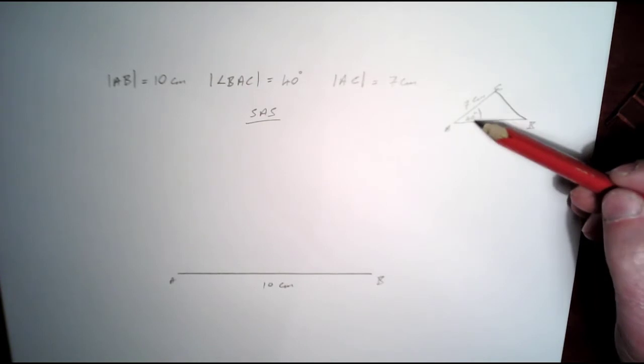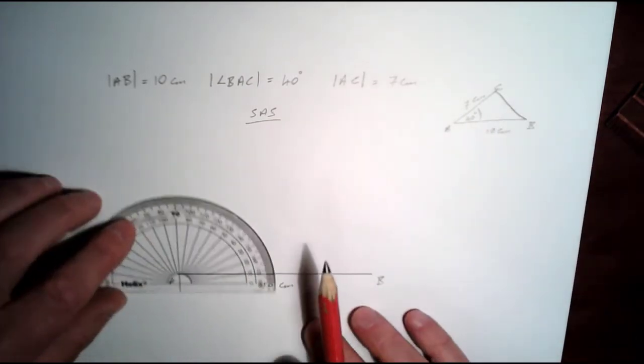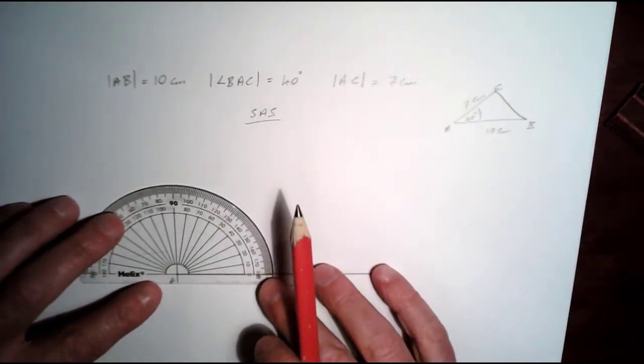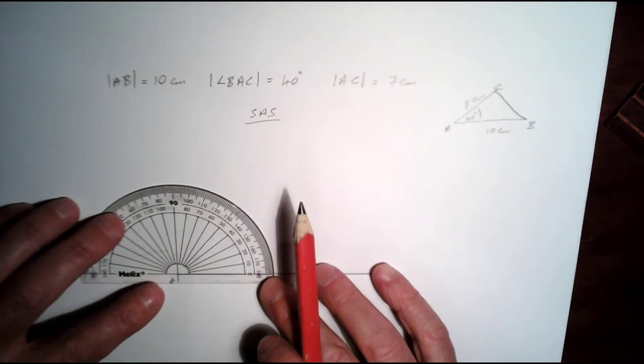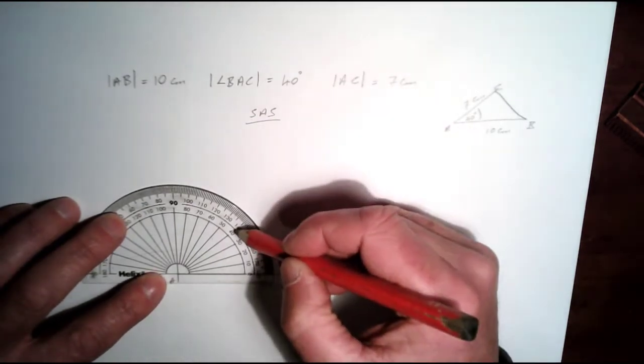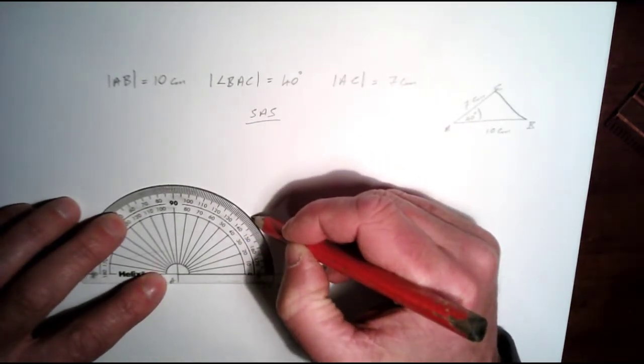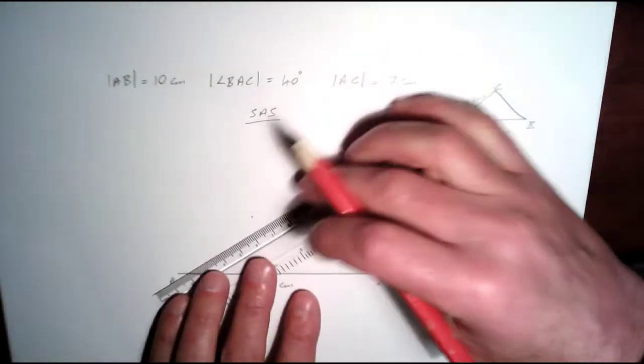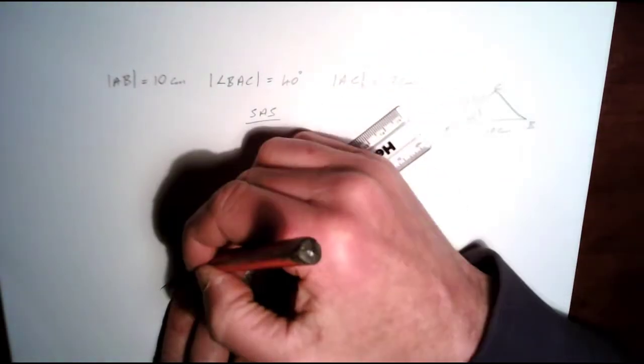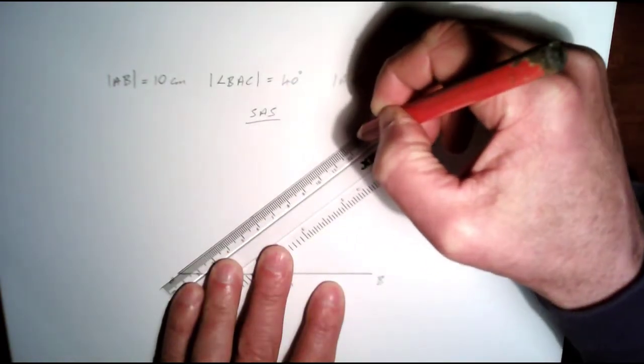The next thing I'm going to do is construct this angle here which is 40 degrees and that's from A. So go to A, come up here to 40 degrees and just put a dot there. I'm just going to draw that line from A through that point.